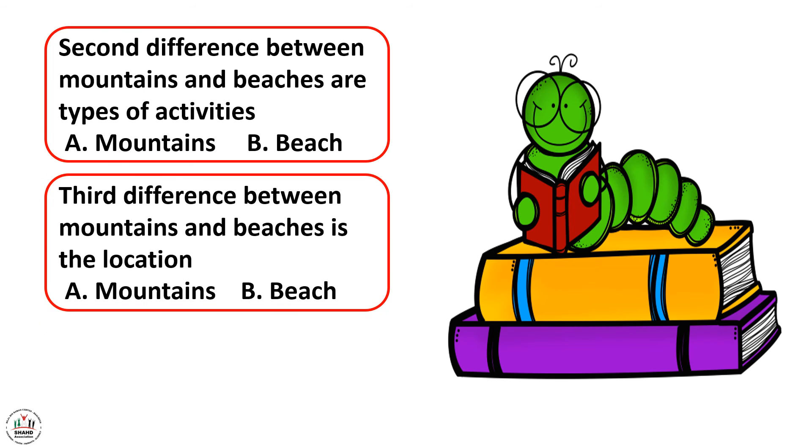The third difference between mountains and beaches is the location. First, you talk about the location. Talk about the location of the mountains or the beach.